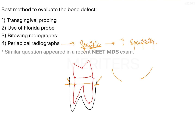Bitewing radiographs are useful to identify calculus and proximal surface lesions. The problem with periapical radiographs is that they are two-dimensional, so when it is an interdental crater, you cannot identify it.